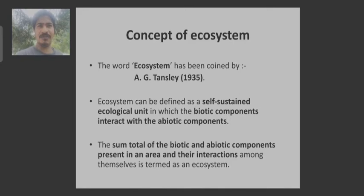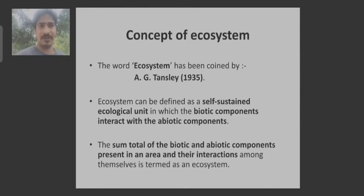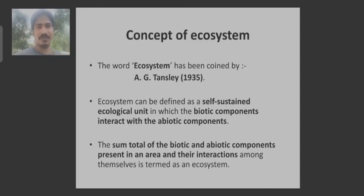So what do you mean by ecosystem? In simple meaning, it is a self-sustained ecological unit in which the biotic components interact with the abiotic components. This may seem a little bit tough, so let me make it easier.